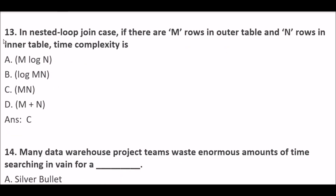In nested loop join, if there are m rows in the outer table and n rows in the inner table, the time complexity is — this is a very important question. Option A: m log n. Option B: log m×n. Option C: m×n (m multiply n). Option D: m plus n. Right answer is Option C — m multiplied by n.